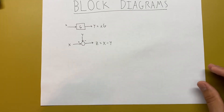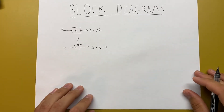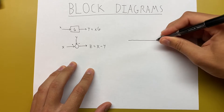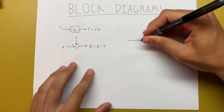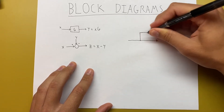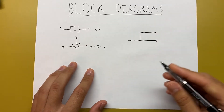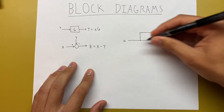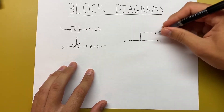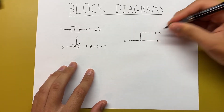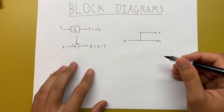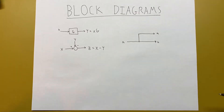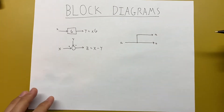The last type of component we're going to look at is called a takeoff point. We'll have a signal and then a takeoff point — it splits the signal so that if the input signal is A, then both outputs are also A. This is all the same signal. It's similar to a node in electrical engineering, where all points at the node are at the same voltage.